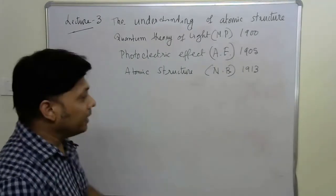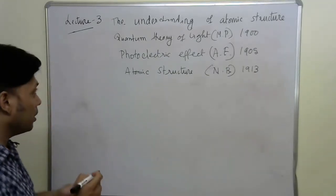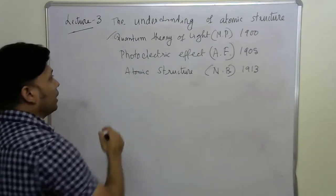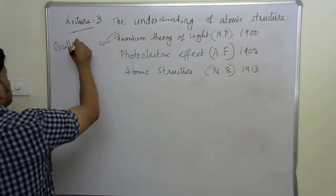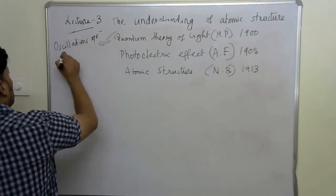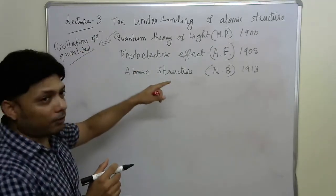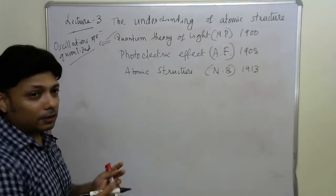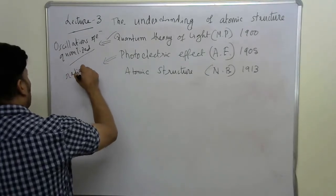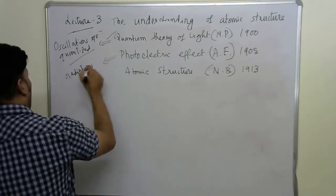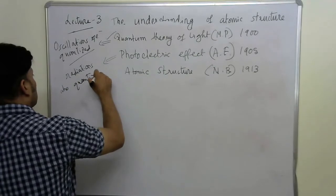Let's take a look of the revolutionary things that began in 1900 and then it will be a chronological order. The first came the quantum theory of light by Max Planck in 1900. The major outcome is that oscillations of electrons are quantized. That's what we learned. And then, 1905, Albert Einstein established and extended the existing quantum theory by saying that not only oscillation but the radiations are also quantized in terms of photons.